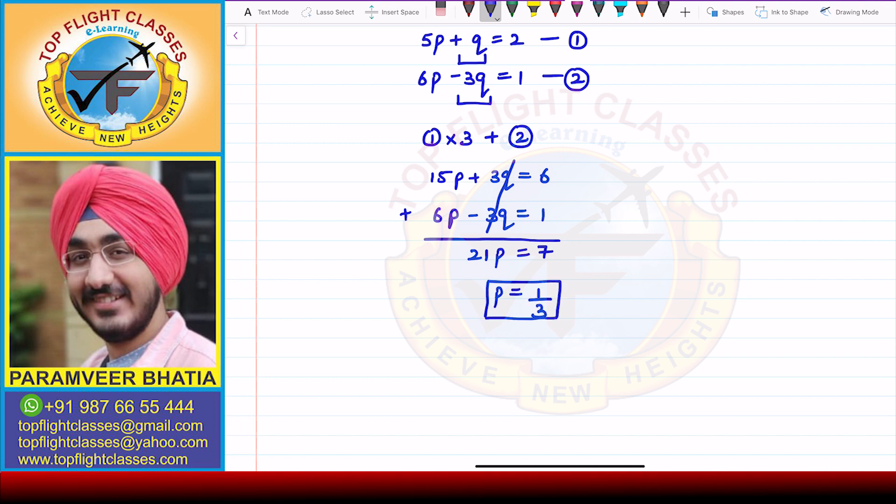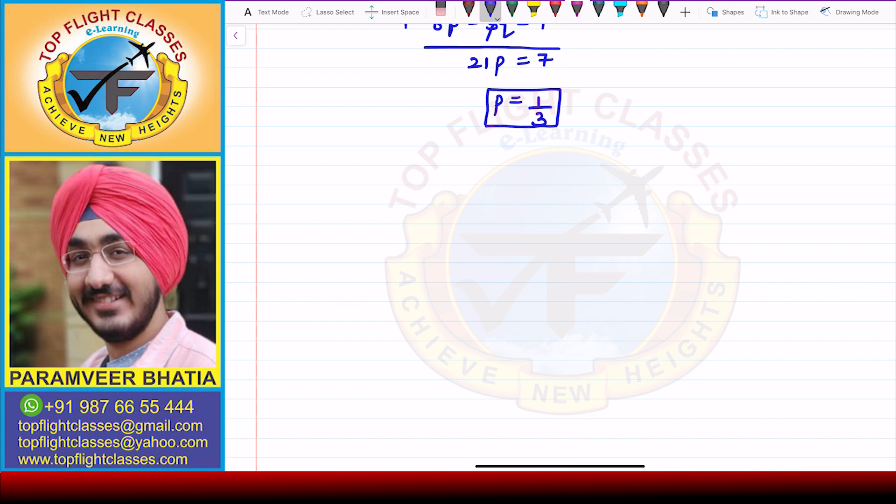Now I'll put this in any one of the two equations. Let us say I put it in equation 2. So from there I will get 6 × p, that is 6 × 1/3 - 3q = 1. So this is 2, so from here I will get -3q = 1 - 2 = -1.